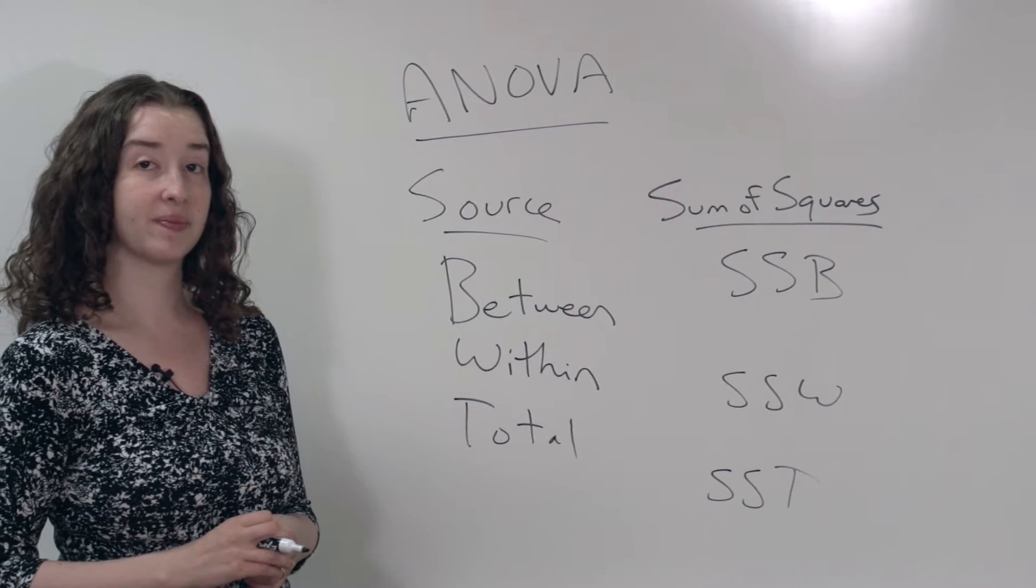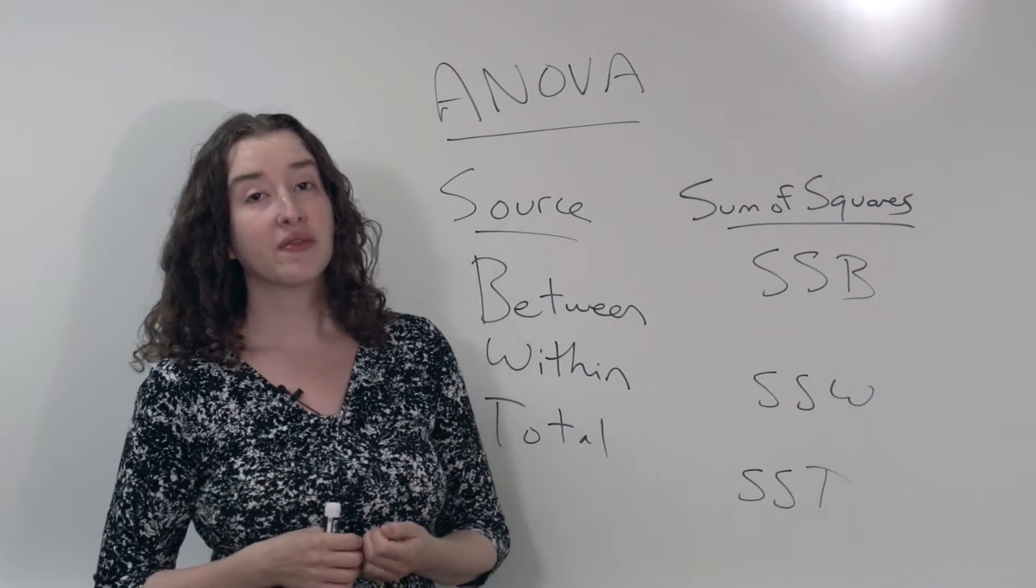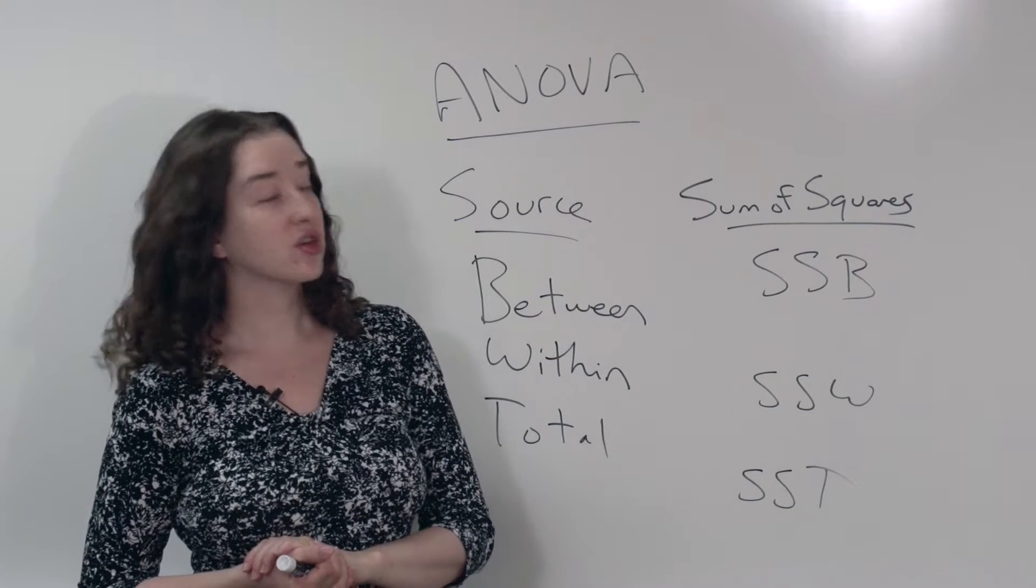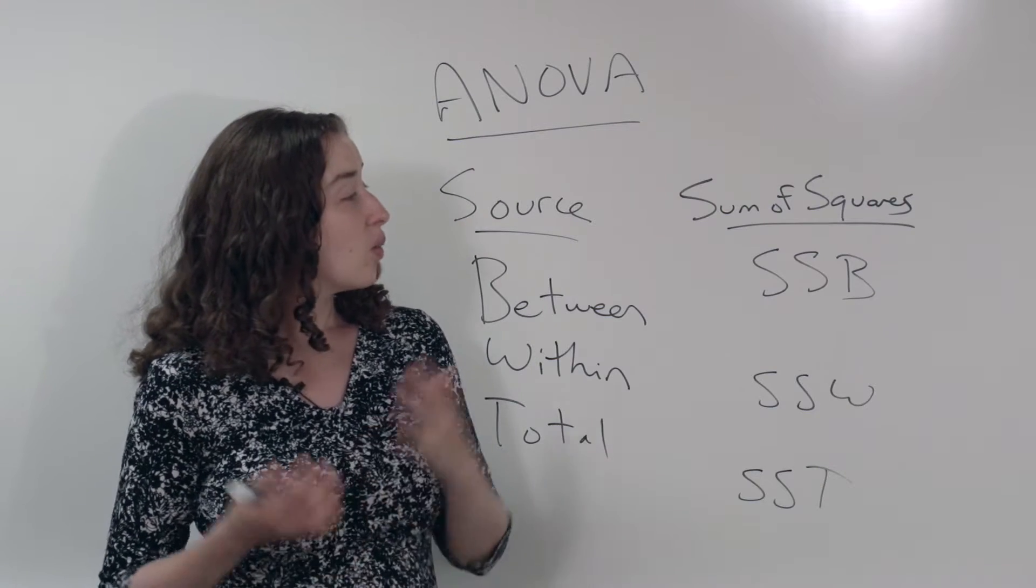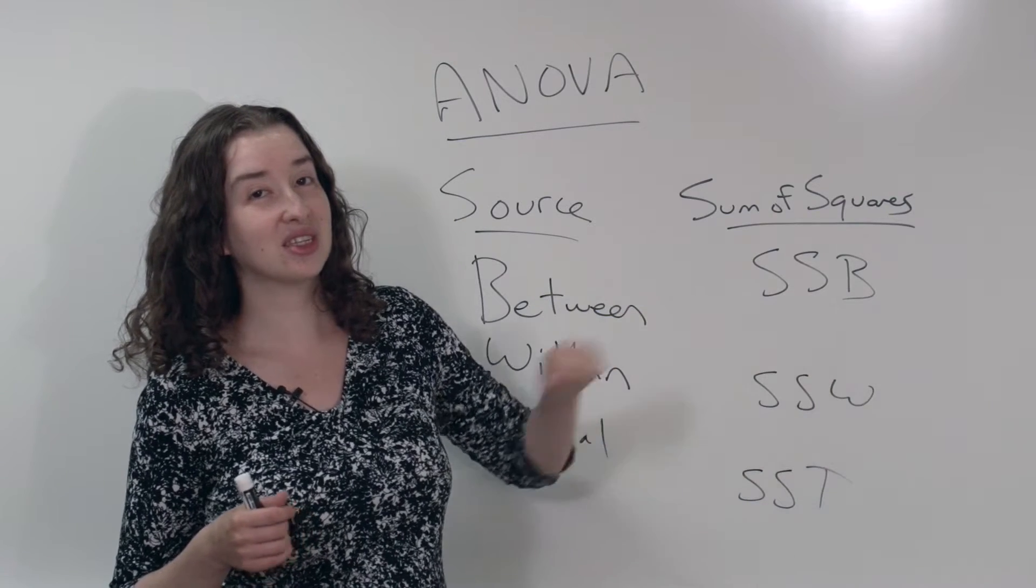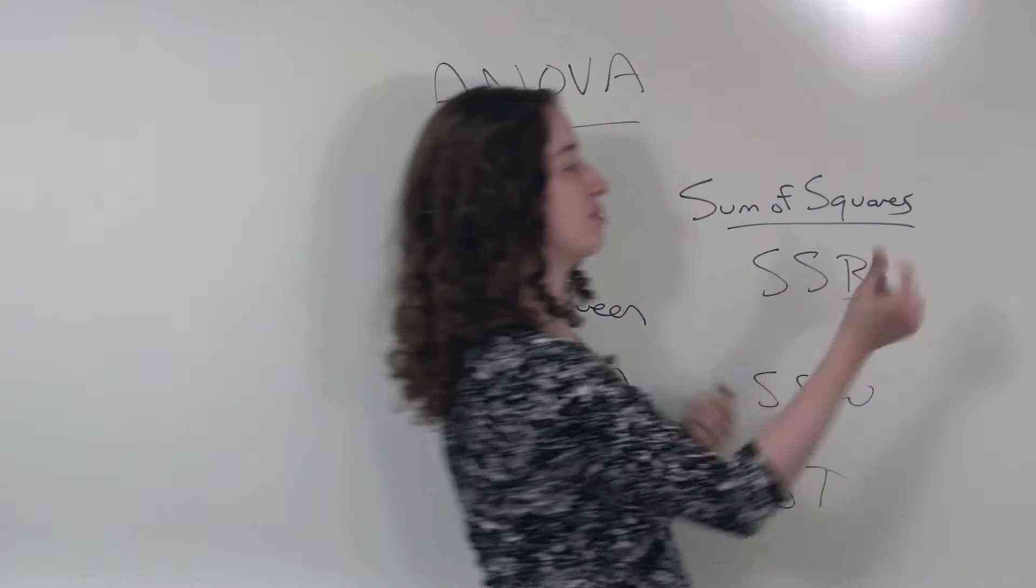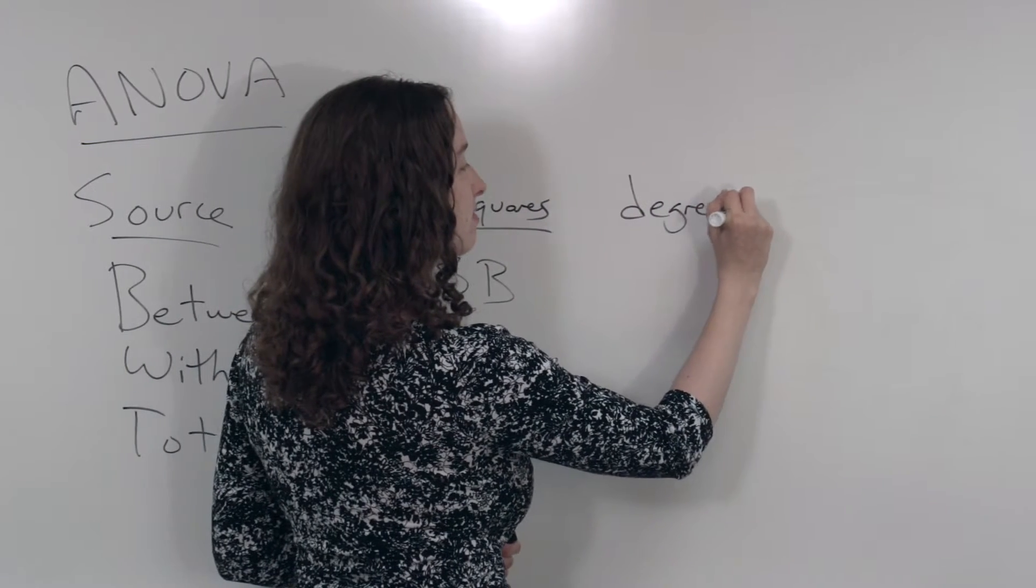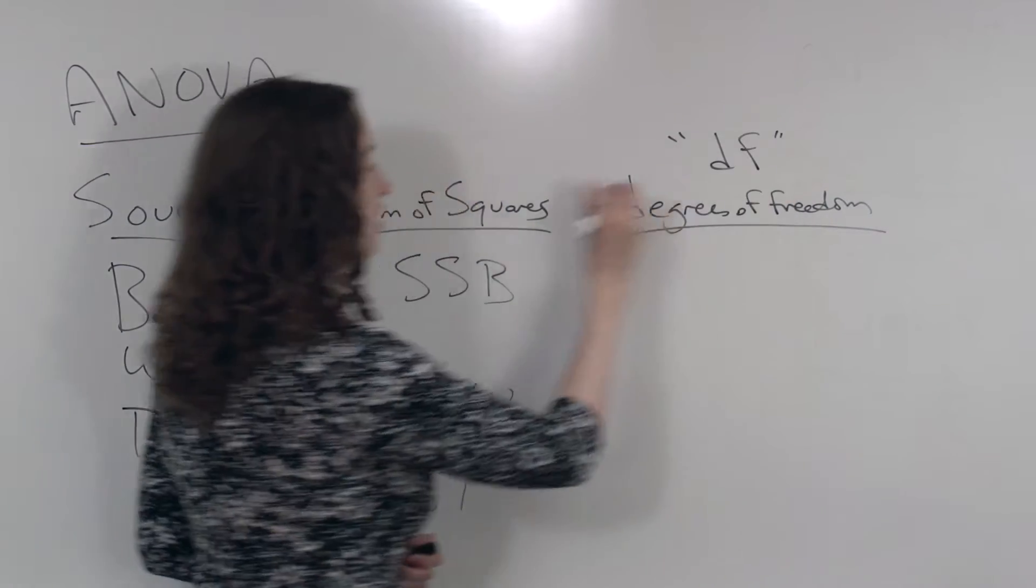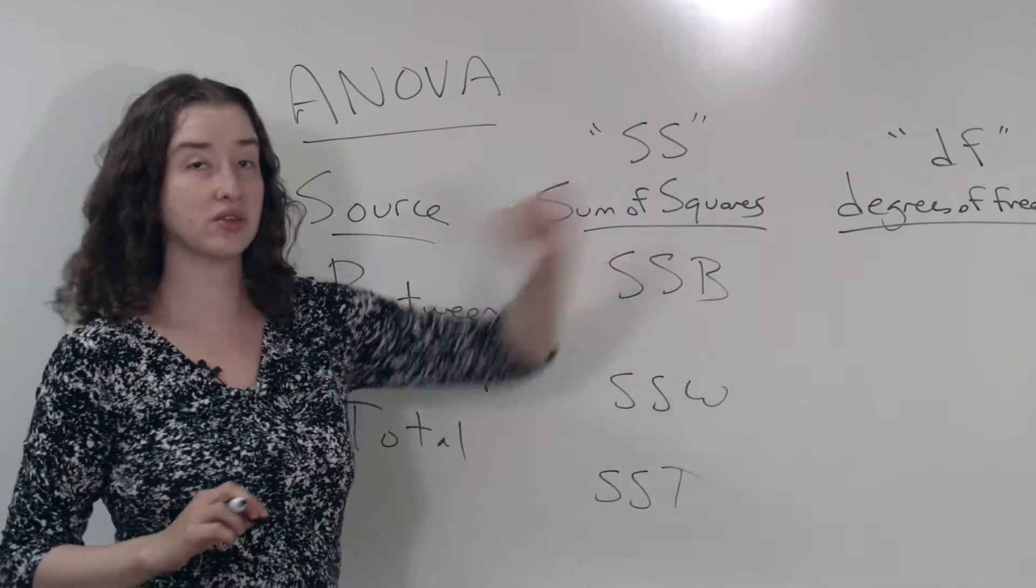So we've already filled in two columns of our ANOVA table, just based on the discussion we've already been having. The next column is going to be labeled degrees of freedom. The degrees of freedom is a number that reflects how much information we have about each of these quantities. Another way to think about the degrees of freedom is, what's the thing that we would divide these quantities or related quantities by in order to get a variance that we're used to. Degrees of freedom, and often, especially in computer output, these are abbreviated SS for sum of squares, or DF for degrees of freedom.